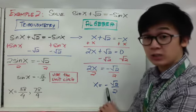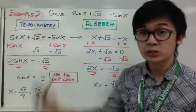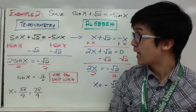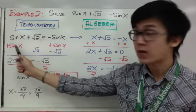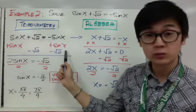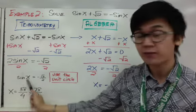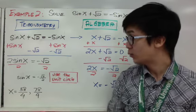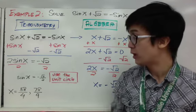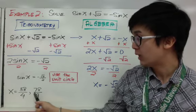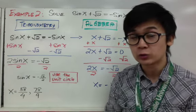Negative √2/2 is a familiar value when translated to trigonometry. In the trig version, add sine x to both sides to eliminate negative sine x, then subtract √2 from both sides, giving 2 sine x = negative √2. Divide both sides by 2 so sine x = negative √2/2. Using the unit circle, the angle measures that give negative √2/2 for sine are 5π/4 and 7π/4.